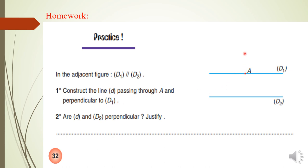We have to put the set square, the right angle on (D1) and passing through the point A.